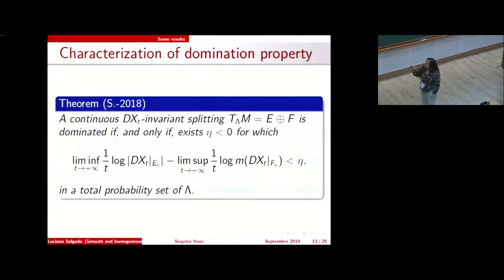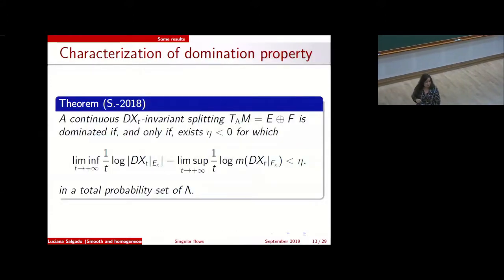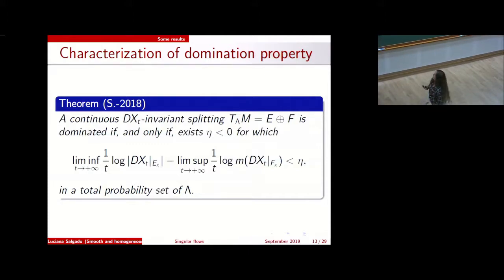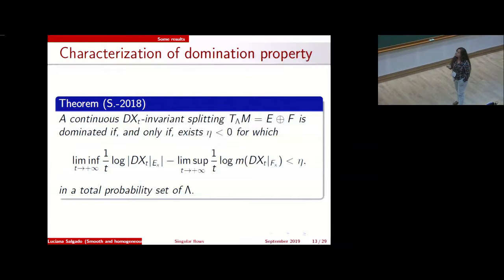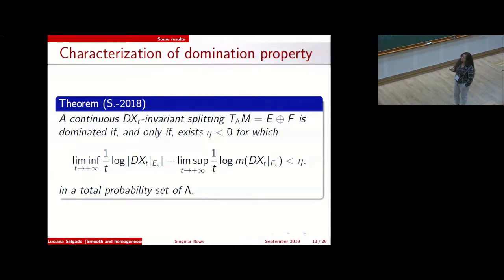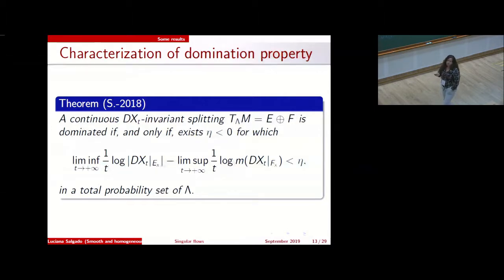My first characterization is for the domination property. We have a continuous Dxt-invariant splitting in two sub-bundles. This splitting is dominated if and only if there exists eta less than zero such that we have a gap in the Lyapunov spectrum — the limit of (1/T) log of the relevant norms minus the other is less than eta, on a total probability set. A total probability set means that for any invariant probability measure, the set with this property has full measure.